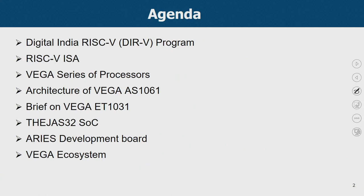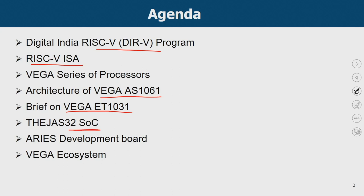We are moving to an introduction to Vega microprocessors. The brief outline for today: we will introduce the concept of the Digital India RISC-V program, briefly touch upon what is meant by RISC-V instruction set architecture, then learn about the Vega series of processors. As a case study we will take up two microprocessors — the Vega ET series and the Vega AS series — and then learn about system on chip with Vega processors inside, the ARIES development board, and the Vega ecosystem.